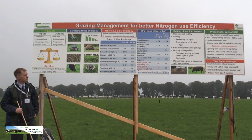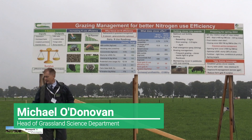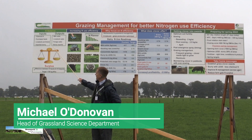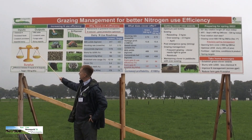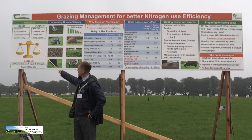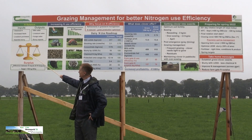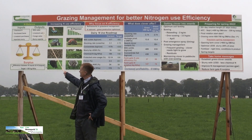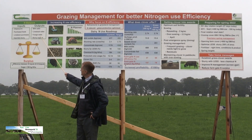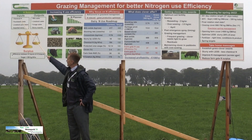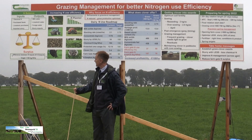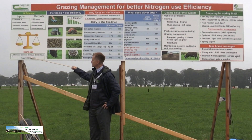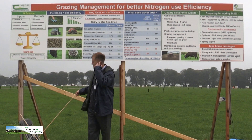Myself and Mike Egan are talking about grazing management to increase nitrogen use efficiency. The key thing is that dairy farming has inputs and outputs. Farm purchased inputs are chemical fertilizer, concentrate, grass silage, livestock purchases, or imported slurry. The outputs are milk protein, milk solids sold at the farm gate, livestock sales, and slurry exports. When we talk about nitrogen use efficiency, we're saying how efficient is the nitrogen on the farm.